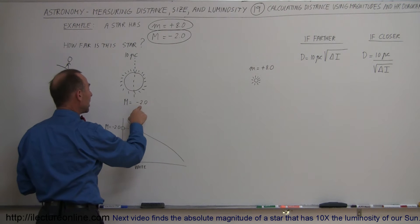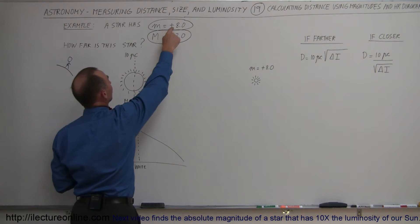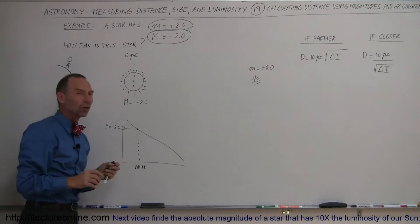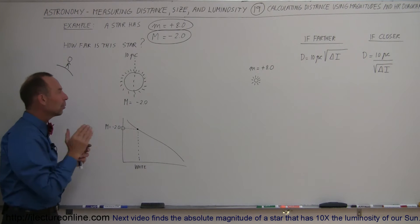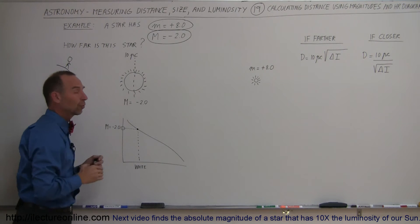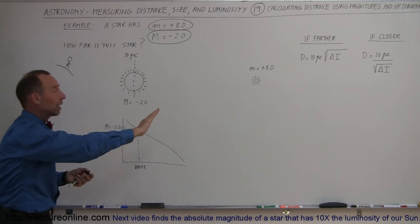But instead, instead of looking as a minus 2 magnitude star, it actually appears to us as a plus 8 magnitude star. So it's a lot dimmer than it would appear to us if it was at 10 parsecs away, which then means it must be much farther away.